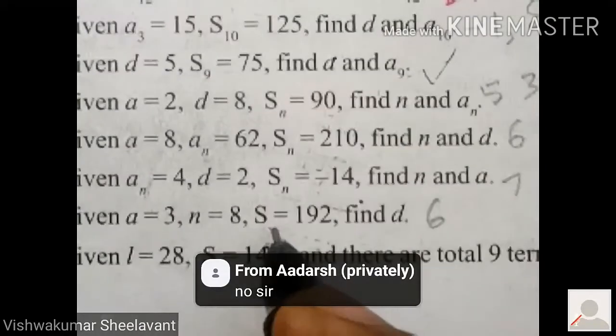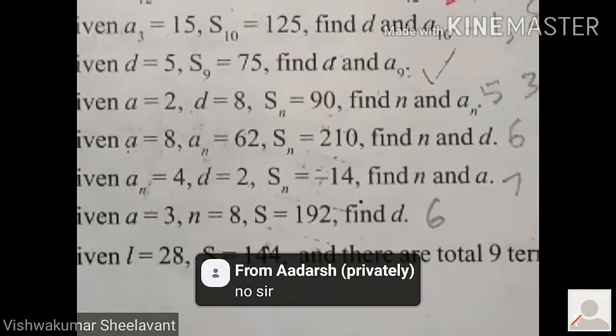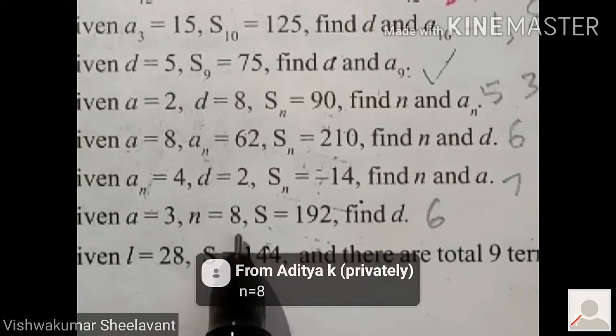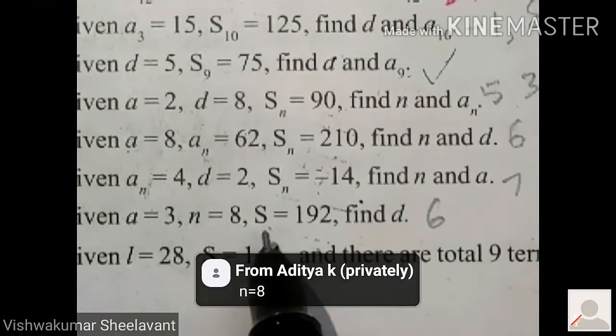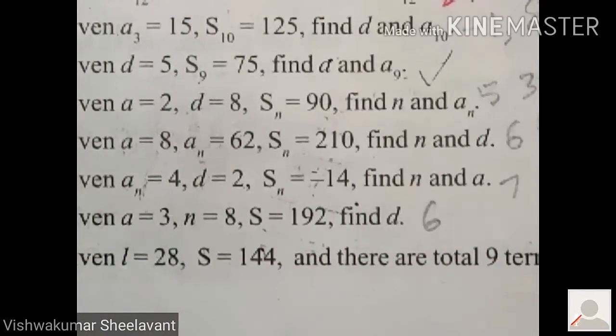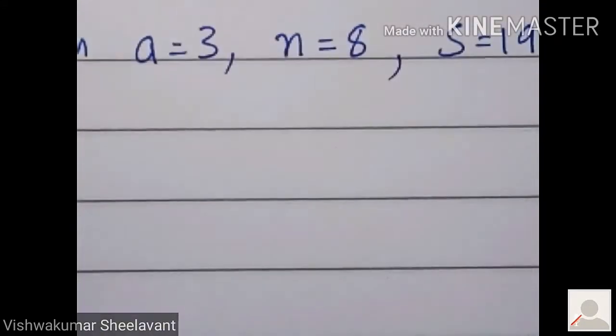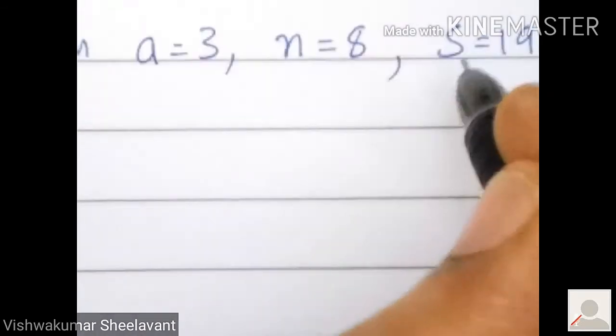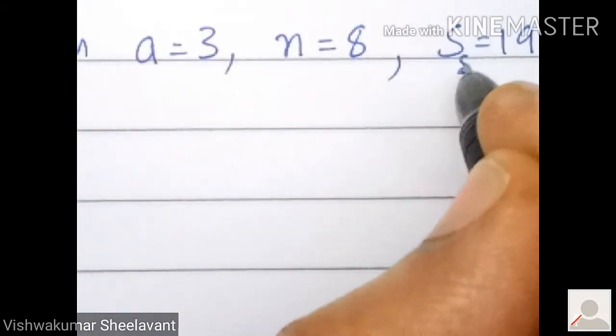There should be n written, okay, because n value they have given. In your textbook you write it as S_n. S_n you have to write, or S_8 you have to write. So I will correct it here. S_8 it is.